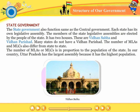State Government. The state government also functions the same as the central government. Each state has its own legislative assembly, and the members of the state legislative assemblies are elected by the people of the state. It has two houses — these are Vidhan Sabha and Vidhan Parishad. Many states do not have a Vidhan Parishad. The number of MLAs and MLCs also differ from state to state and is in proportion to the population of the state.